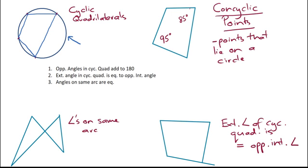Now there's a special property with cyclic quadrilaterals, and that property is opposite interior angles add to 180 degrees. So if we didn't know a quadrilateral was cyclic, we could look at the opposite interior angles. So if we look at these two angles here, 95 and 85 degrees, they add to 180.